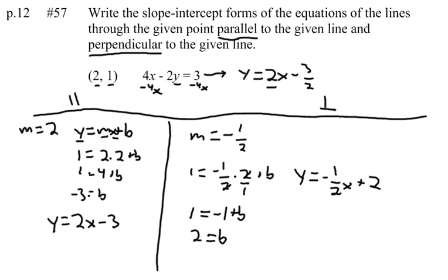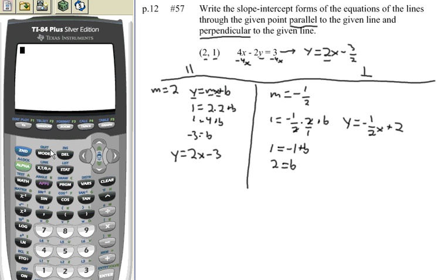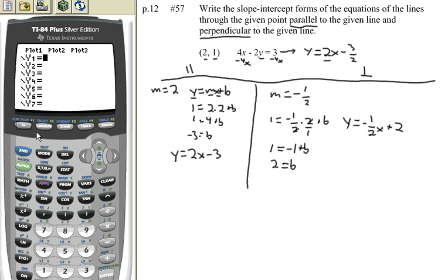Now, just to make sure my answers are okay, I'm going to pull out my graphing calculator. I'll press my y equals key. Let's just type both these equations in here. y equals 2x minus 3. And y equals, let's put this fraction in parentheses, negative 1 half x plus 2.